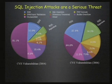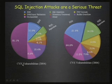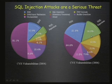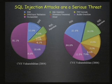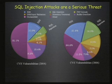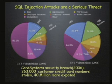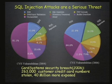SQL injection attacks are a major threat on the internet today. These are data recorded from the common vulnerability index. In 2004, among all reported attacks, SQL injection contributed to 5.5%. In 2006, looking at the same data from CVE, it had grown threefold to 14%. In fact, in August 2007, a report was released by Symantec where almost 63% of all vulnerabilities reported on the internet were either SQL injection or cross-site scripting. SQL injection is a very significant threat. Last year, in the card system security breach, about 263,000 customer credit card numbers were stolen and about 40 million were exposed. This was covered widely in the media, so this is a very important problem.